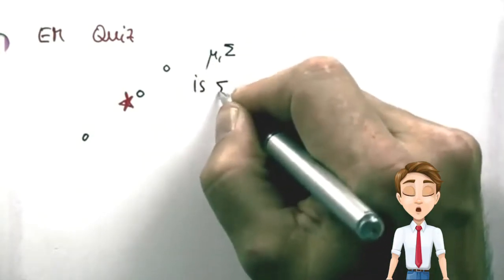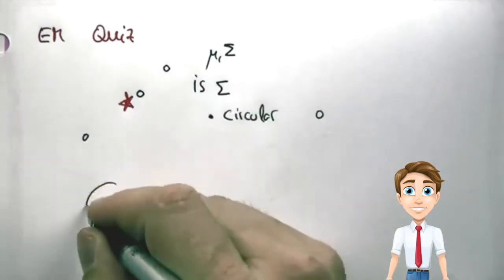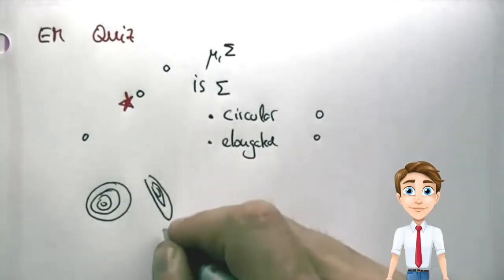And the question is, is sigma circular? It would be like this. Or elongated? Be like this, or like this.